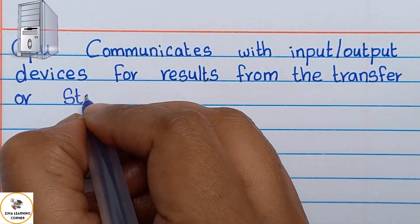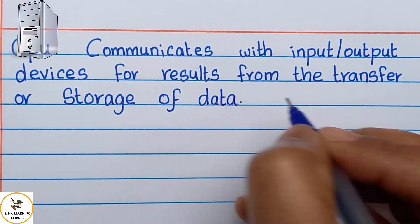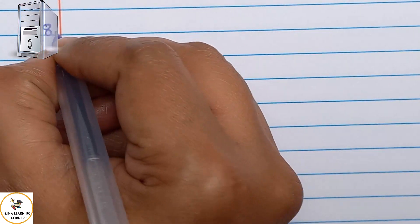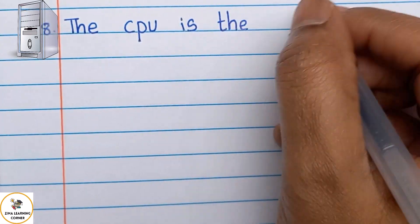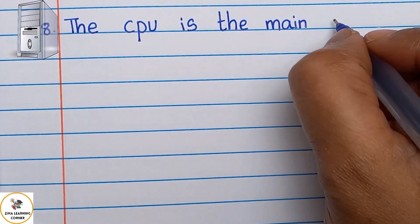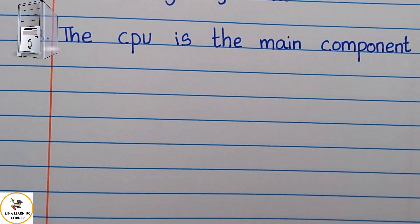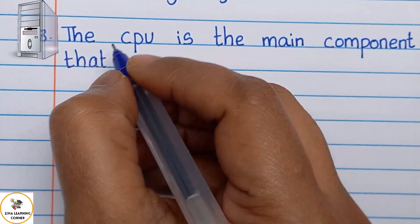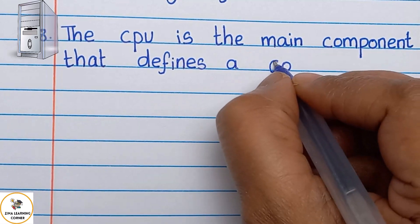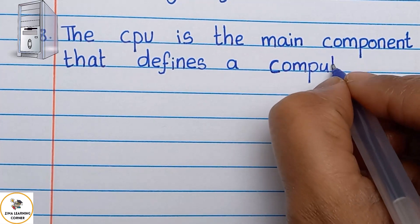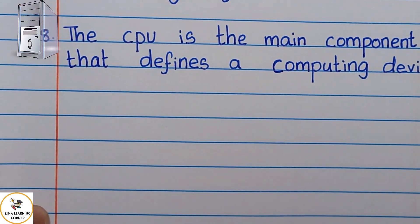Point number seven: CPU communicates with input and output devices for the transfer or storage of data. Point number eight: CPU is the main component that defines a computing device.